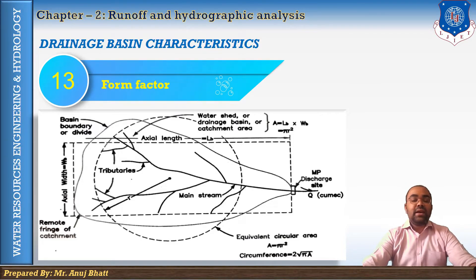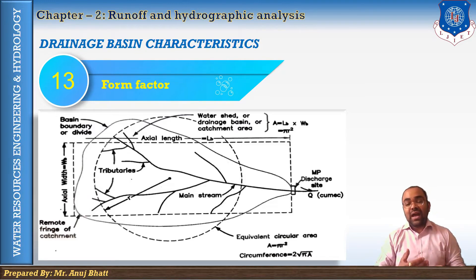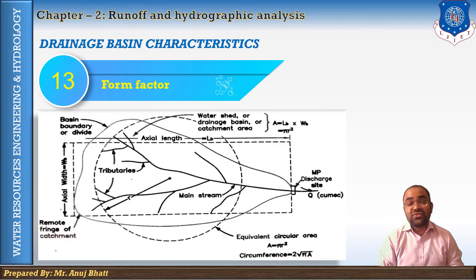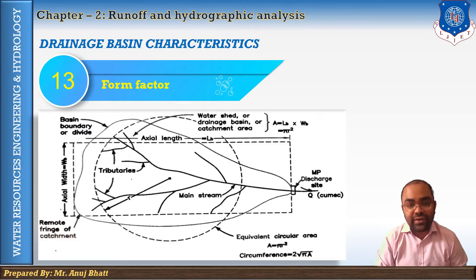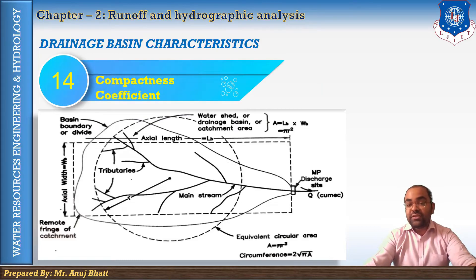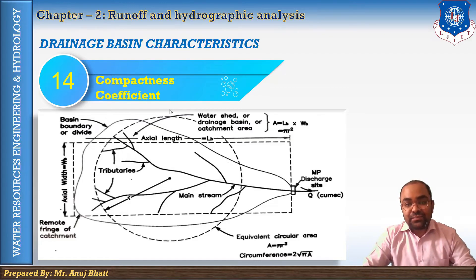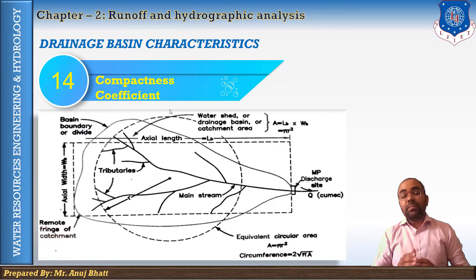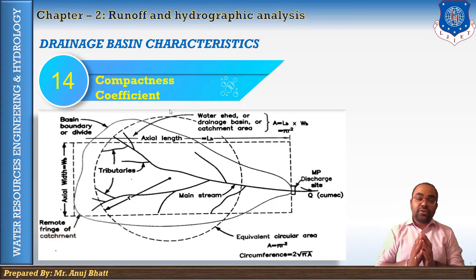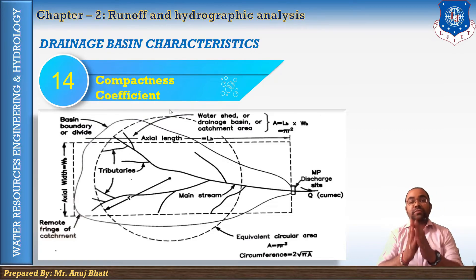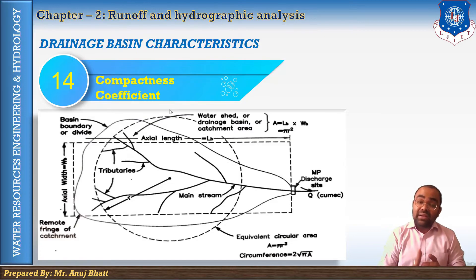The next is form factor of the basin — defined as the ratio of the basin area to the square of its length. The shape of a drainage basin is generally expressed by this form factor. The next is compactness coefficient — defined as the ratio of the perimeter of the basin to the perimeter of a circle whose area is equal to the basin area. The compactness coefficient is independent of the size of the basin and mainly dependent on the slope.